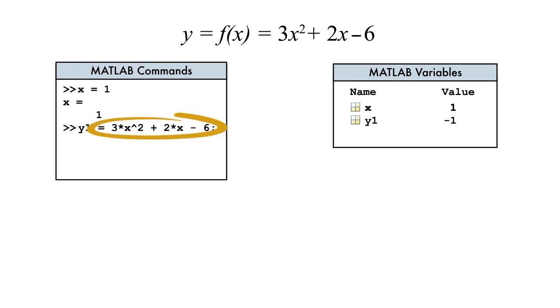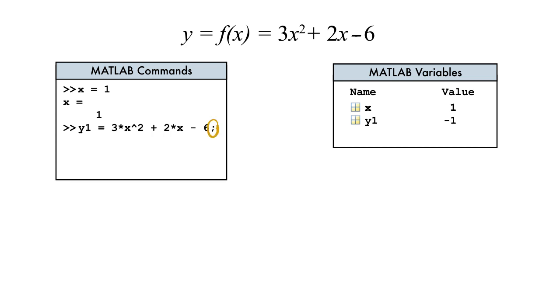The expression to the right of the assignment operator is evaluated using the current value of x. Then the result is assigned to the variable. Notice that y1 is in memory, but the result was not displayed. That's because we ended the statement with a semicolon, which prevents output from being shown.